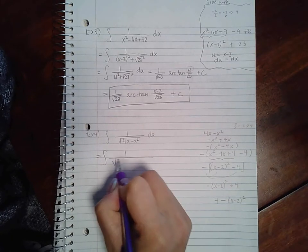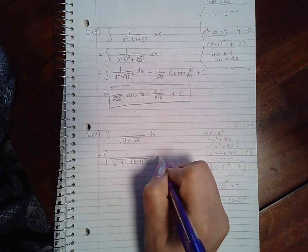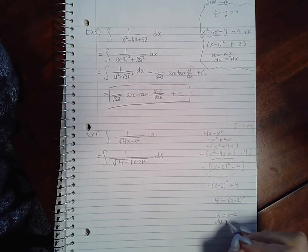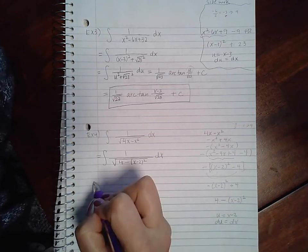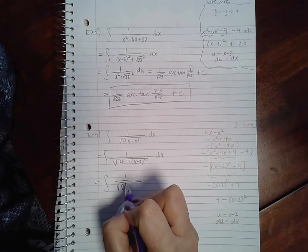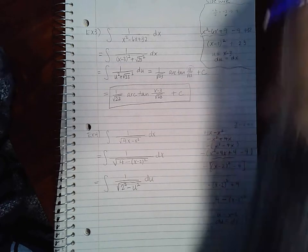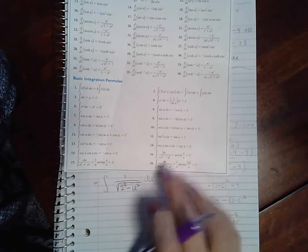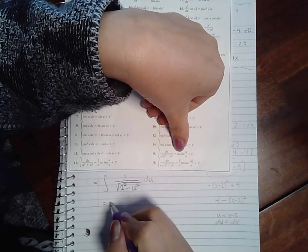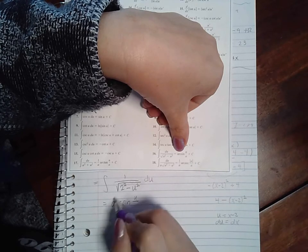So when I'm coming here I'm going to rewrite this as 1 over the square root of 4 minus x minus 2 squared dx. If you let u equal x minus 2, du will just be dx. So if I substitute in there I get the square root of 2 squared minus u squared du. Now that again follows one of my formulas, we have a squared minus u squared, which is arc sine, so we get arc sine of u over a which is 2 in this case plus c.